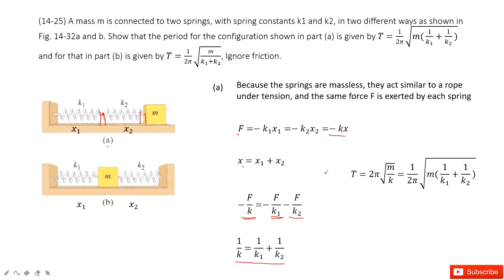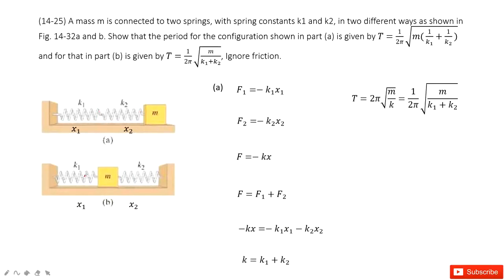For case b, the two springs are connected with a mass in the middle. In this case, the forces are different because k1 is connected with the mass and k2 is connected with the mass.